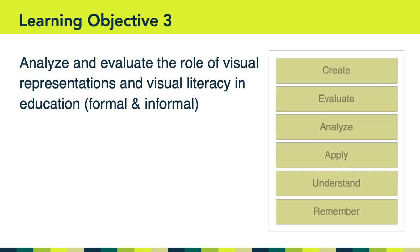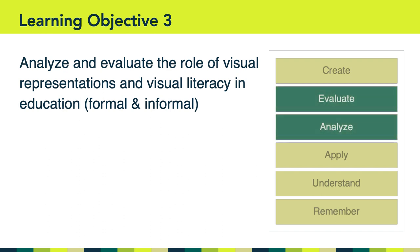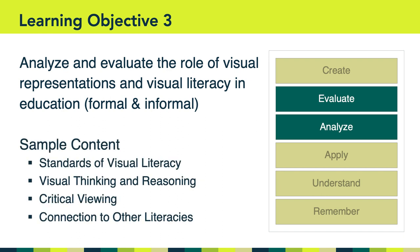Our third learning objective states that we're going to analyze and evaluate the role of visual representations and visual literacy in education, both in formal and informal contexts. Again, there are two verbs within Bloom's taxonomy: evaluate and analyze. In terms of content, we're going to take a look at standards of visual literacy, do some reading about visual thinking and reasoning, and talk about critical perspectives and critical viewing.